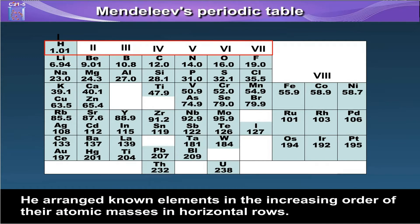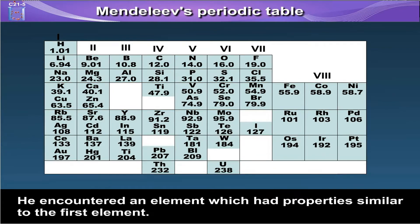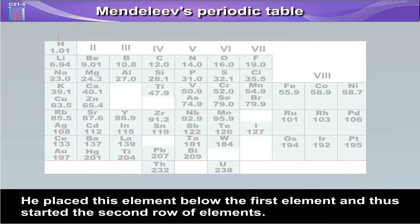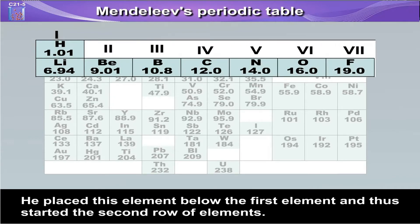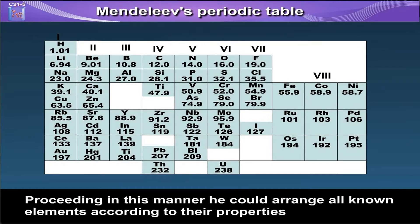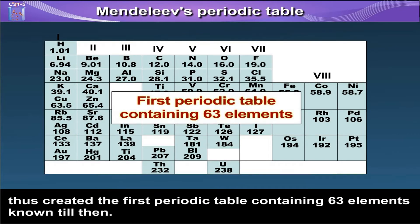He arranged known elements in the increasing order of the atomic masses in horizontal rows. When he encountered an element which had properties similar to the first element, he placed this element below the first element, and thus started the second row of elements. Proceeding in this manner, he could arrange all known elements according to their properties, thus creating the first periodic table containing 63 elements known till then.